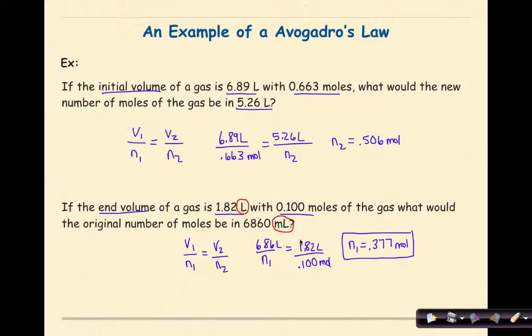my N volume is 1.82, my original volume is 6.86 liters. So if I'm working backwards here, my moles of gas should be larger.